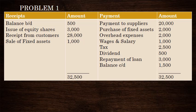Then balance carried down — the closing balance of cash. Balance brought forward is the opening balance of cash, and balance carried down is the closing balance of cash. Now the question is to get the overall items.